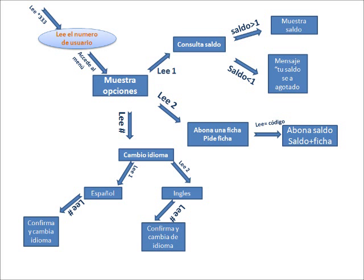Como se muestra aquí, es todo lo que puede hacer la máquina. En la primera opción, si lee uno, consulta saldo: si el saldo es mayor a uno muestra el saldo, y si es menor manda un mensaje. Si lee la opción 2, abona ficha y pide el código para abonar. En la opción 3, que es la opción gato, es para cambiar de idioma: da dos opciones, uno para español y dos para inglés, y hay que marcar gato para confirmar el cambio.